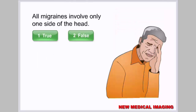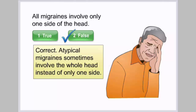All migraines involve only one side of the head — true or false? Correct. Atypical migraines sometimes involve the whole head instead of only one side.